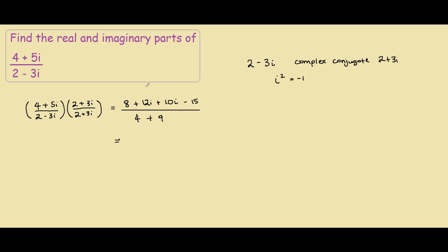So if we clean up the numerator, we have 8 minus 15 is minus 7, and 12i plus 10i is 22i. And for our denominator, we have 4 plus 9 is 13.